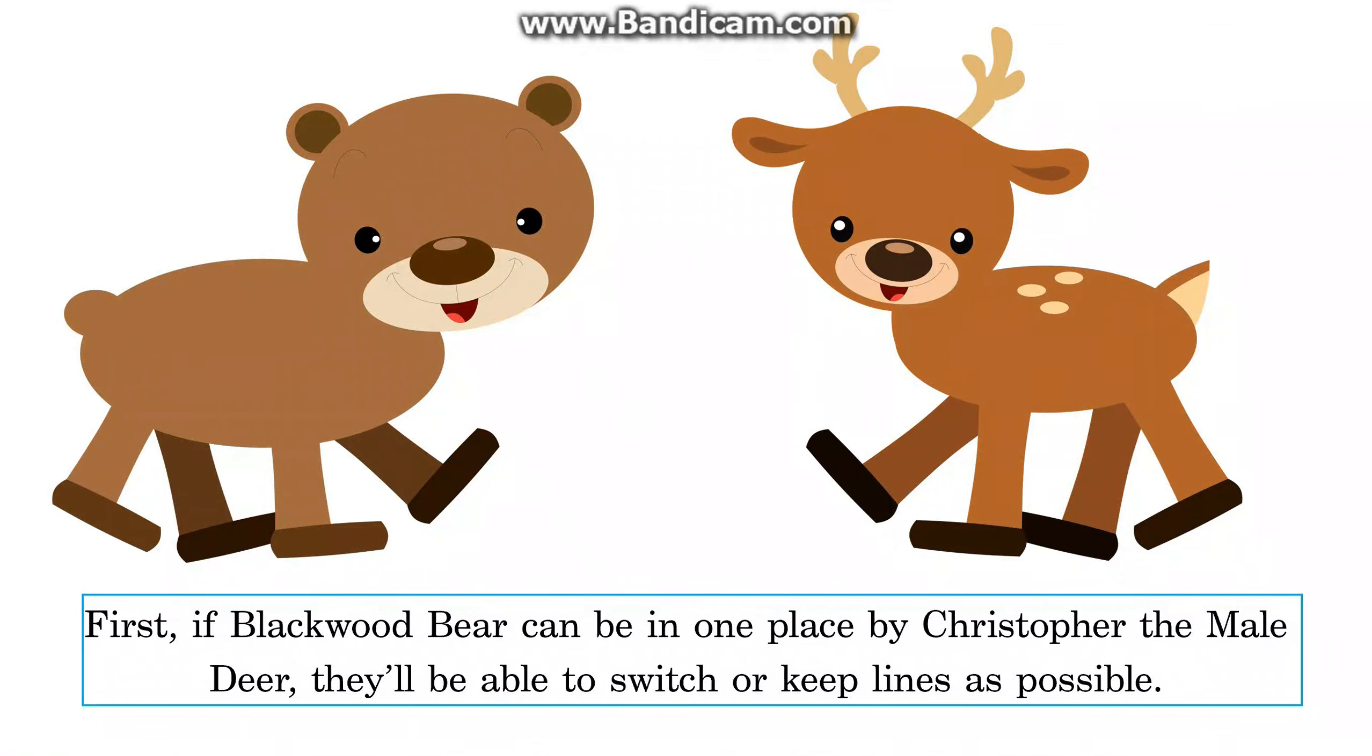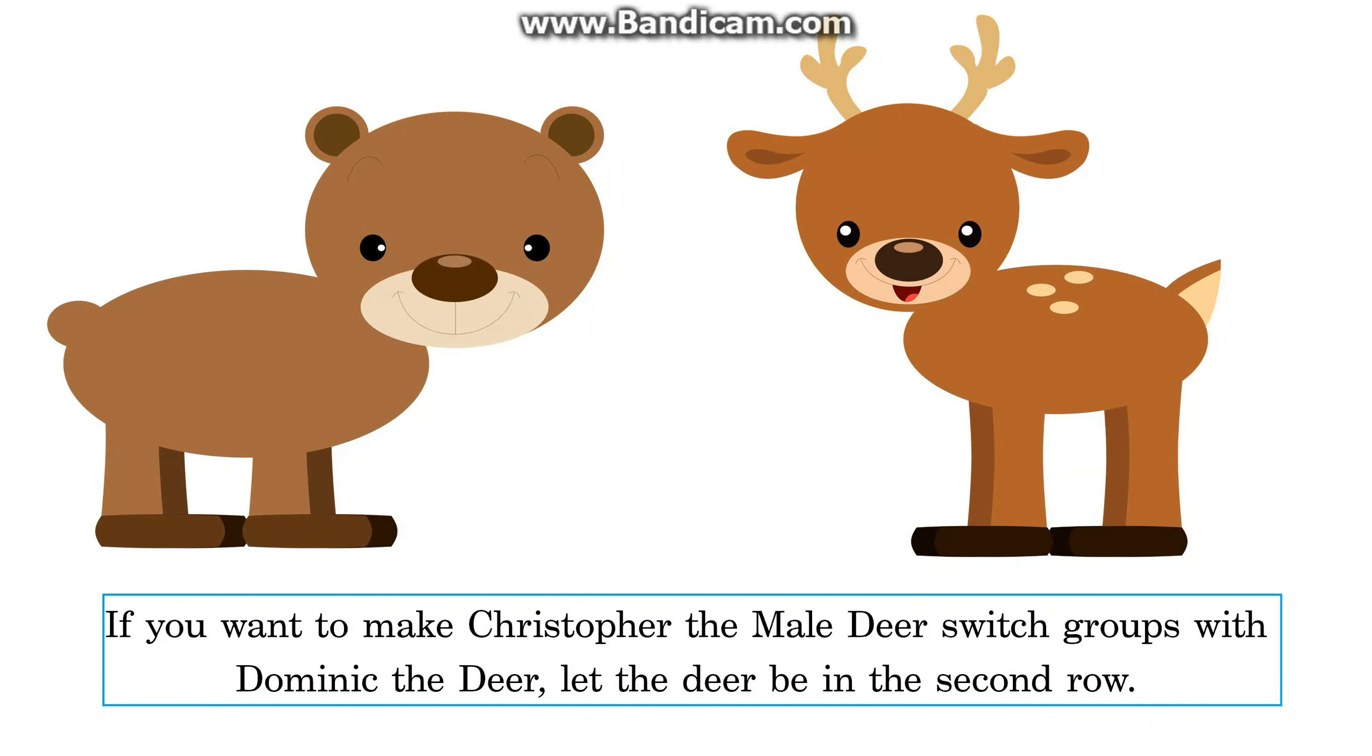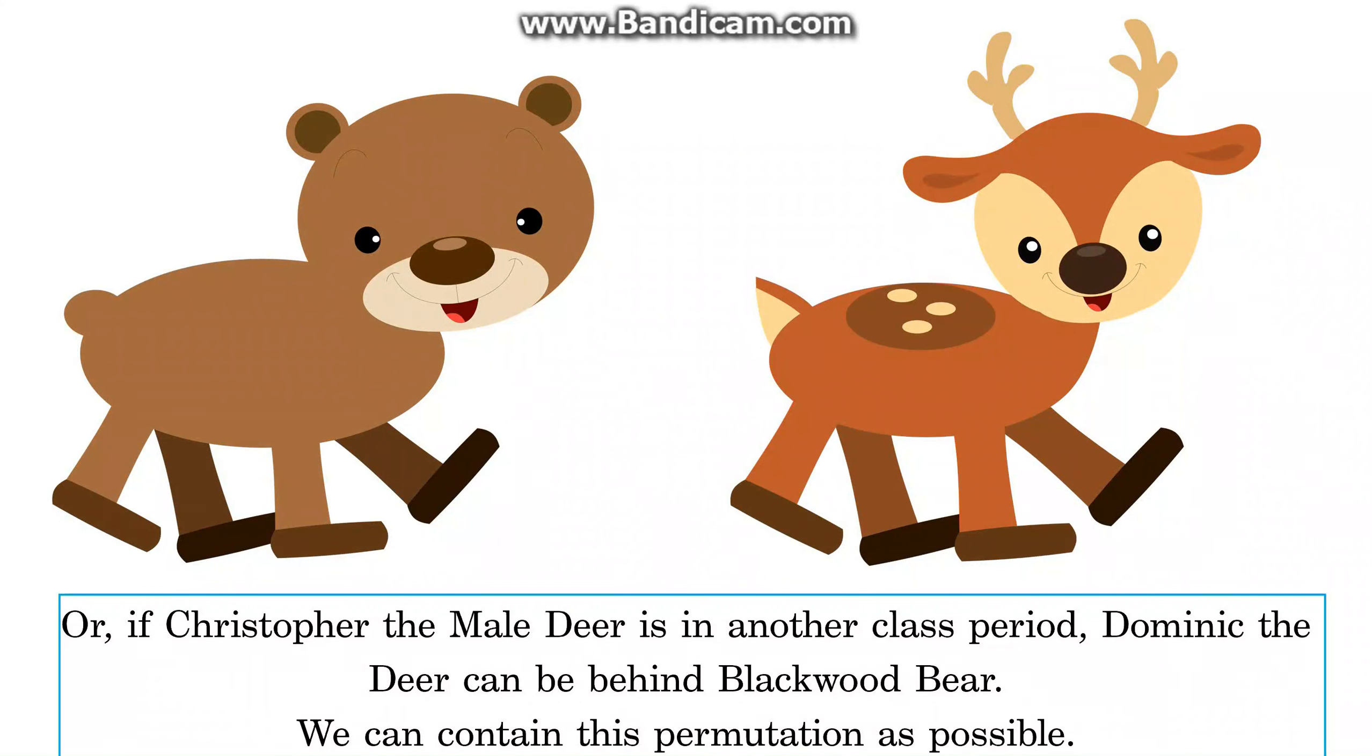First, if Blackwood Bear can be in one place by Christopher the male deer, they'll be able to switch or keep lines as possible. If you want to make Christopher the male deer switch groups with Dominic the deer, let the deer be in the second row. Or, if Christopher the male deer is in another class period, Dominic the deer can be behind Blackwood Bear.